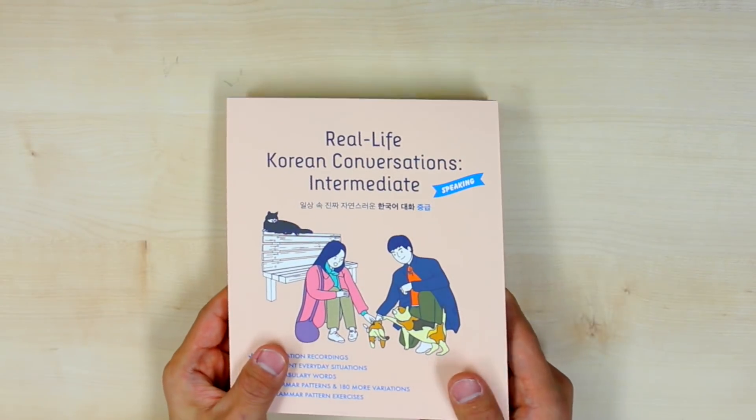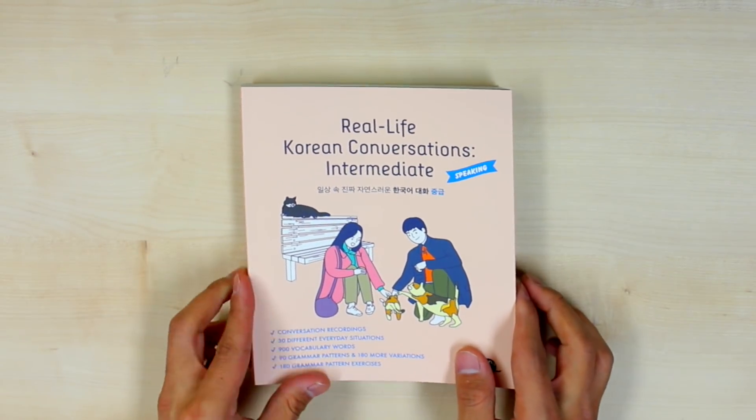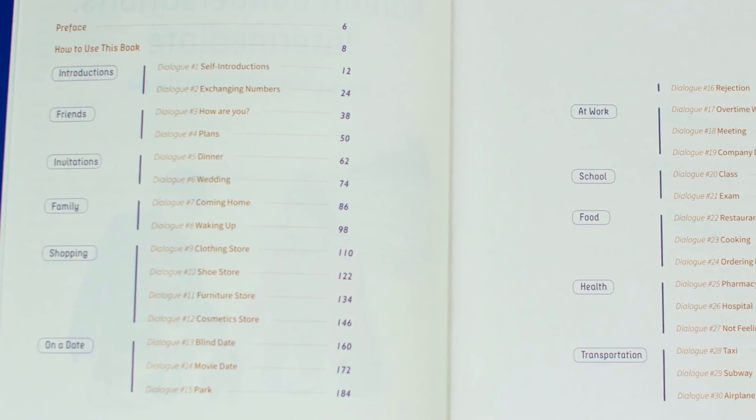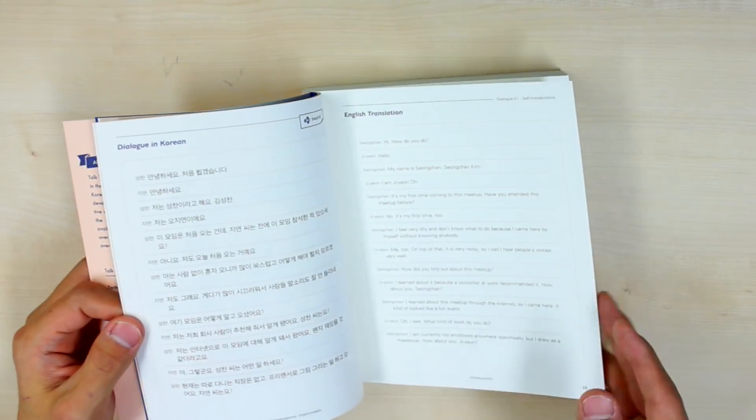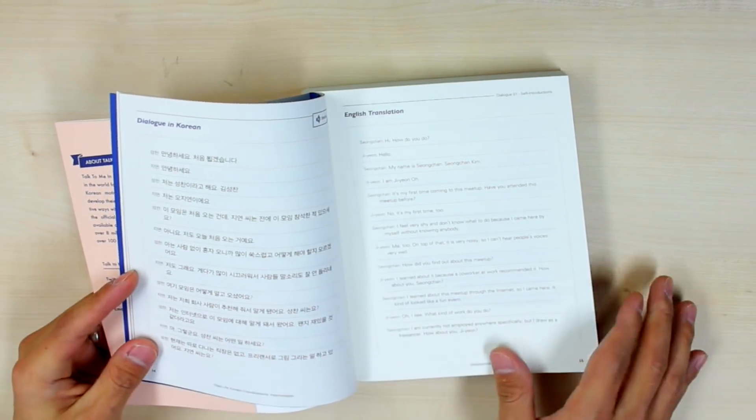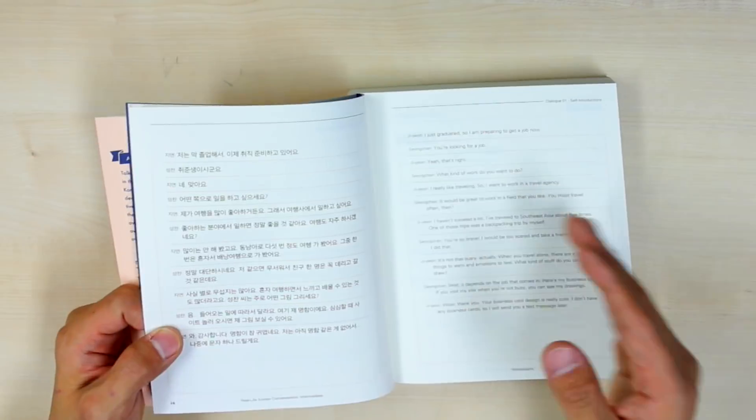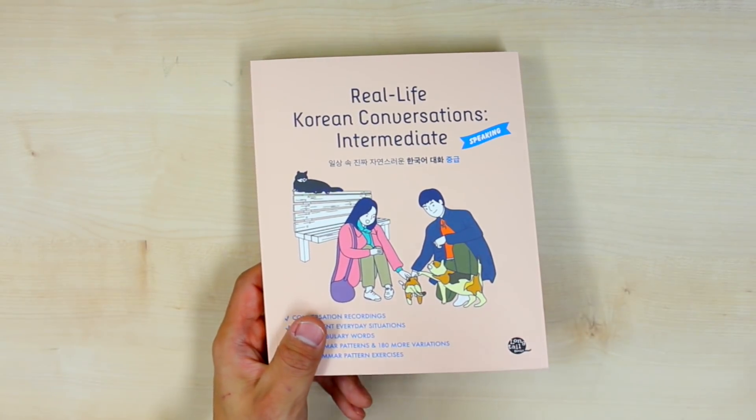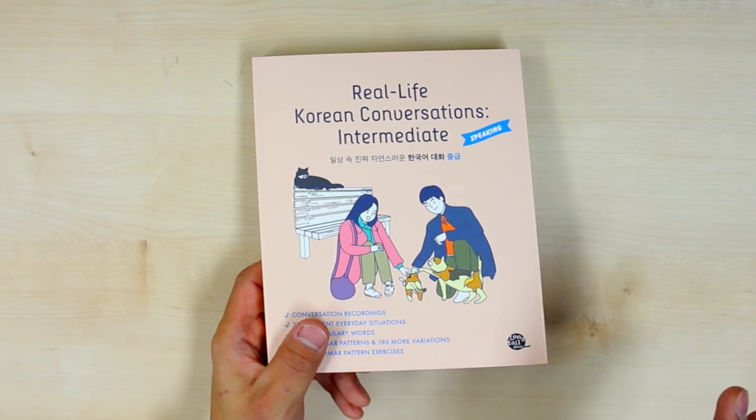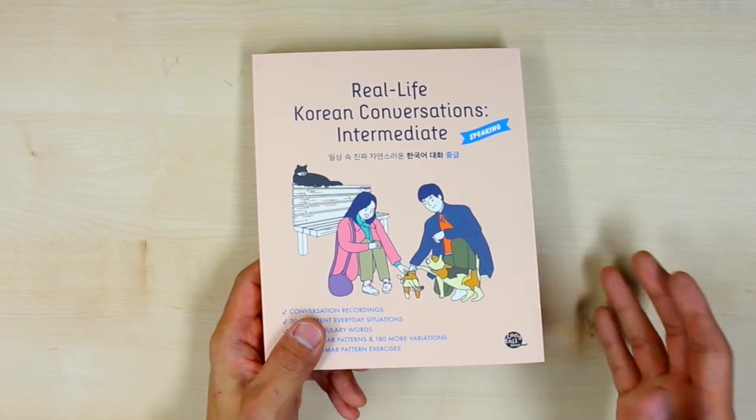And now naturally in this book, in the intermediate level book, we have intermediate level conversations and we have 30 different topics and situations. As you can see, this is the length of most of the conversations that we have in this book. So after studying with this book, of course, you should be able to have very basic conversations like 안녕하세요, 감사합니다, 이거 좋아요, things like that.